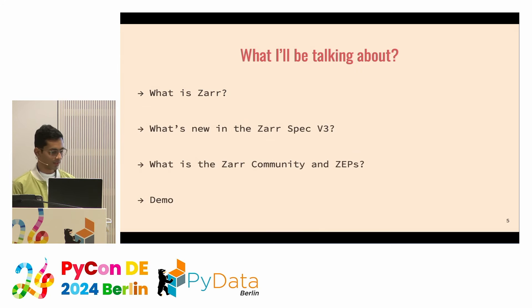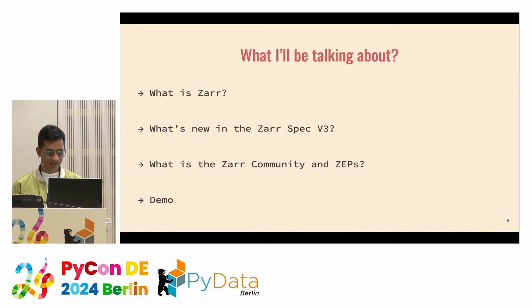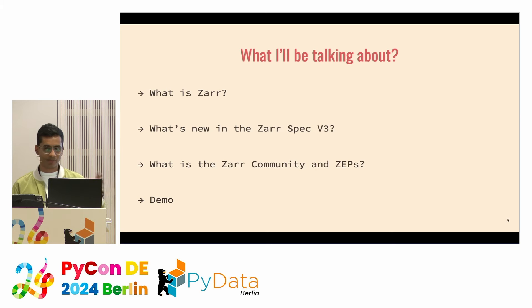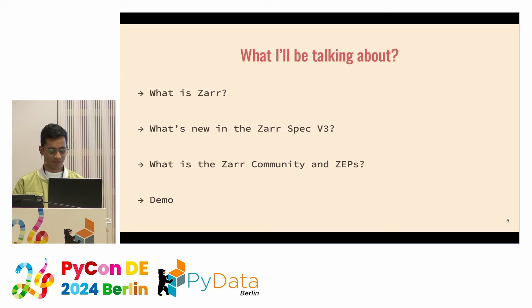We'll be mostly talking about going from the fundamentals — basically what Zarr is, which we'll cover using illustrations and neat graphics. Then we'll go towards what's new in the Zarr spec v3. Then I'll talk a bit about the community, how we form the community, how we accept proposals, and how we work on the specification. We have a process known as ZEPs — Zarr Enhancement Proposals, similar to PEPs. And there's going to be a small demo of how things are working in Zarr v3.